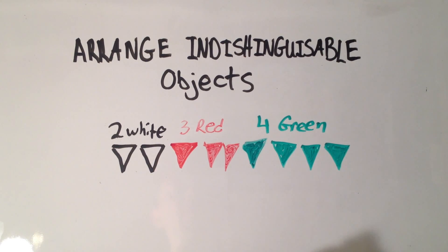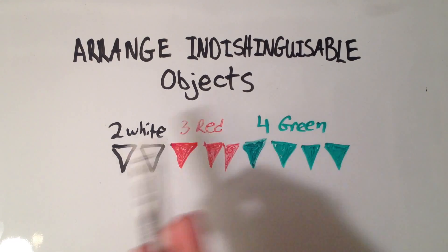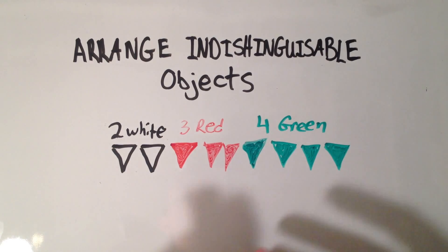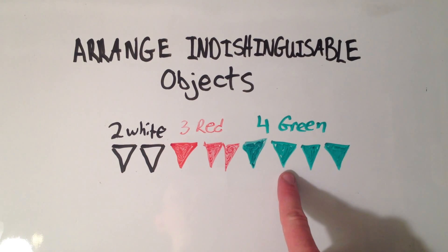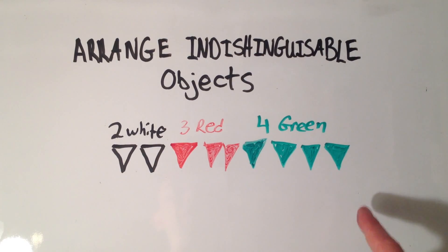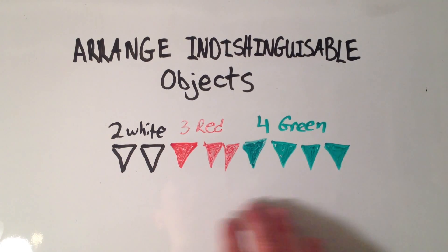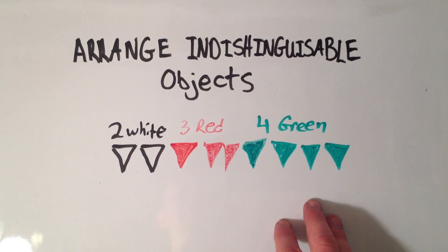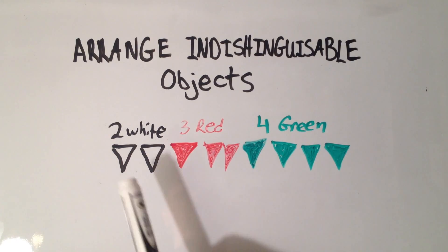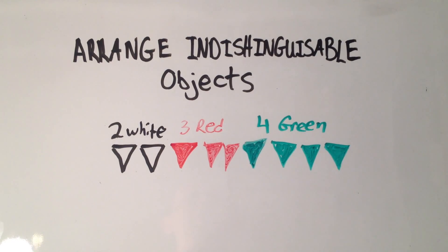So all that really means is, if I wanted to mix these up, how many ways could I mix them up so they would all look different? Like if I switch this green flag and this green flag, it would look exactly the same. So maybe you're a lifeguard and you have so many flags, and you can only make so many flag symbols because some of your flags are the same color.